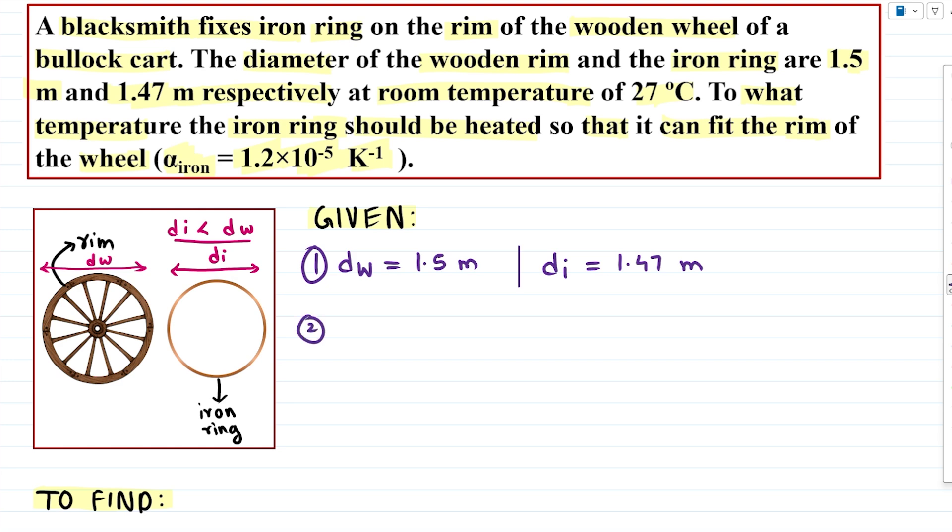And other than that we have given the temperature, that is the initial temperature T1, which is 27 degree Celsius. Apart from this we also know the coefficient of linear expansion alpha. So alpha of iron is 1.2 into 10 raised to minus 5 per kelvin. That is the unit for our linear expansion coefficient.